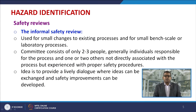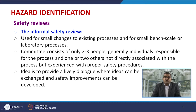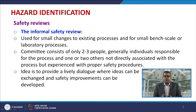Safety reviews are categorized into two types: informal and formal. The informal safety review is used for small changes to existing processes and for bench-scale or laboratory processes, or quality assurance. To perform an informal safety review, a committee should be formed. The committee may consist of only two or three people — generally individuals responsible for the process and one or two others not directly associated with it, but well experienced with proper safety protocols. The idea is to provide a lively dialogue where ideas can be exchanged and safety improvements developed.